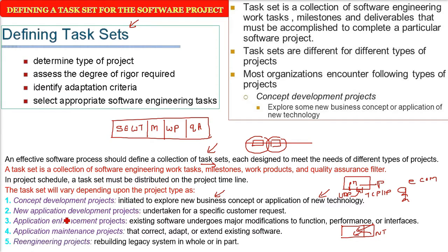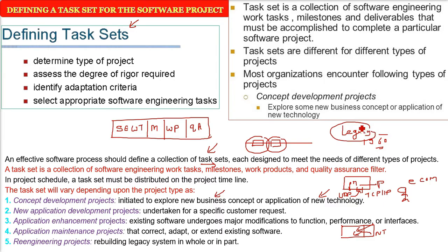Finally, there are re-engineering projects. In re-engineering, there is already a software system in use — called legacy software, from the 1960s or 1970s — and the goal is to rebuild this system either partially or as a whole, meaning completely or some part has to be rebuilt.